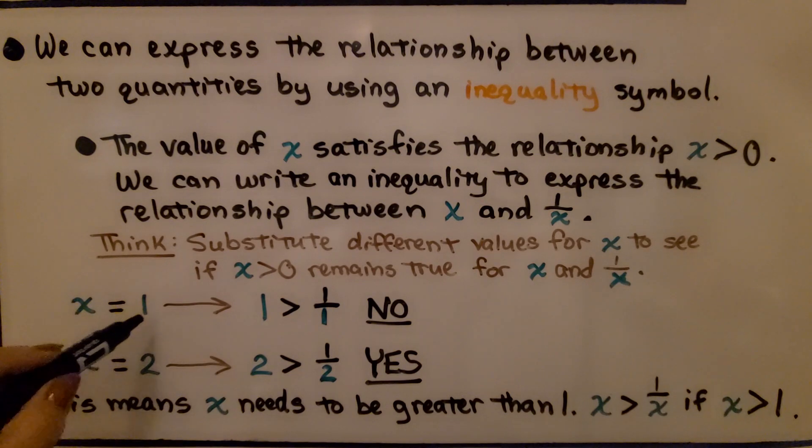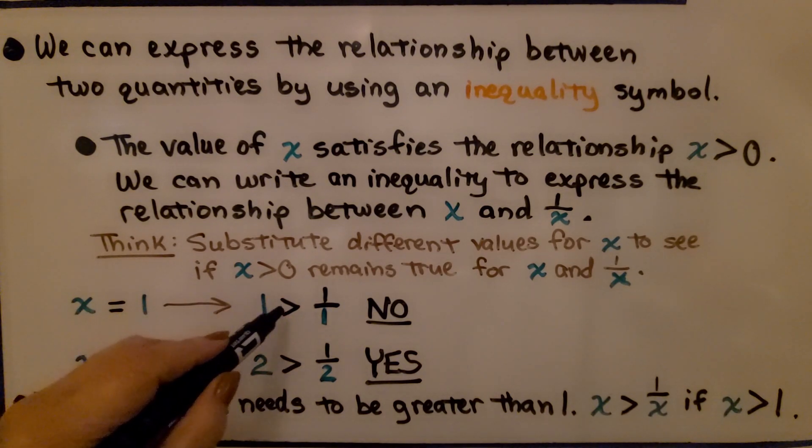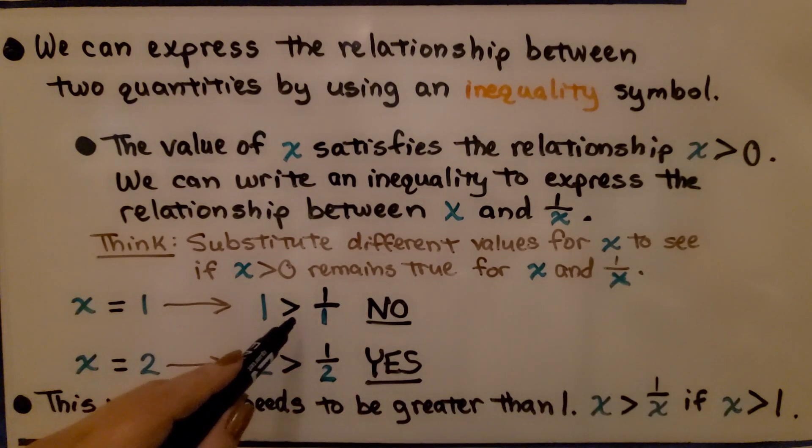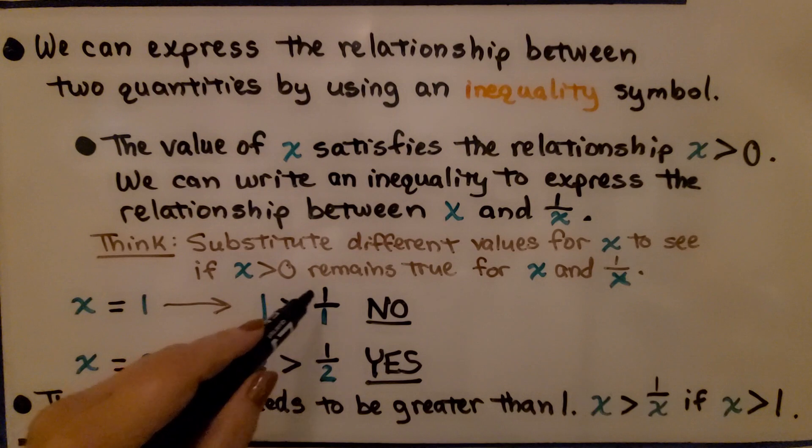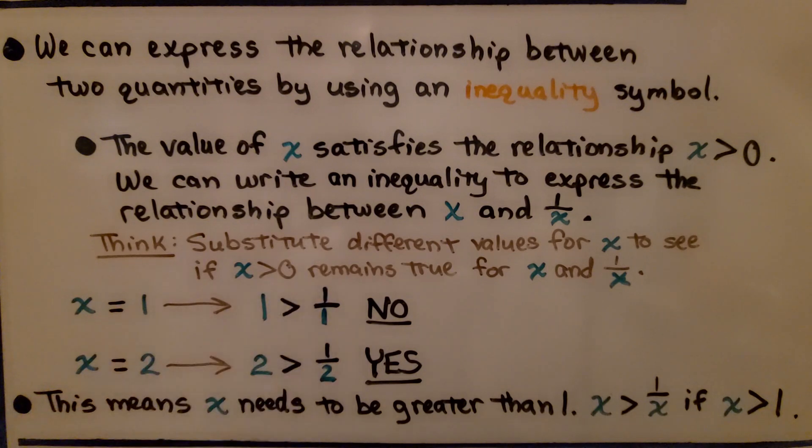If we think, well, let's try 1 for x, then that would be saying 1 is greater than 1 over 1. Well, no, that's not true. 1 is equal to 1. This is the same numerator and denominator, so this is 1. 1 is not greater than 1.